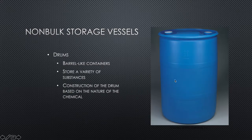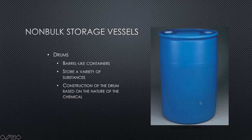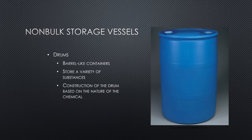Drums are barrel-like containers used to store a variety of substances. The construction of the drum is based on the nature of the chemical — more corrosive chemicals have specific plastics or materials used for those drums. They hold a few ounces to 119 gallons of product. Once you get to 120 gallons, that's a different classification. There are a lot of regulations, which is why there are specific numbers like 119 gallons.